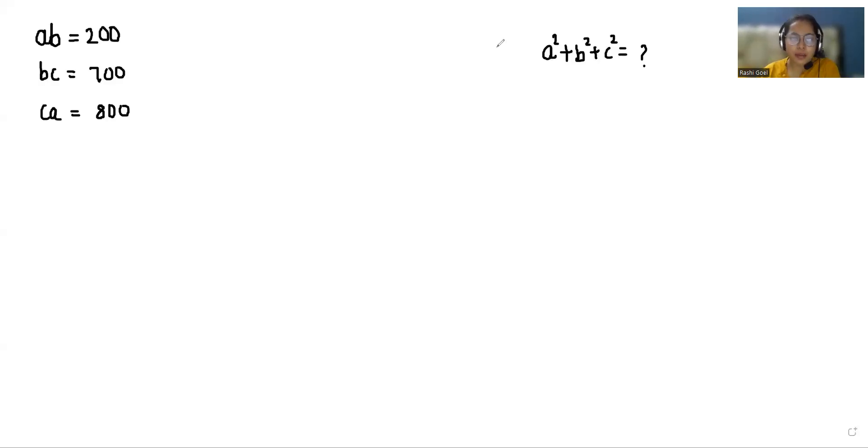Hello everyone, welcome to my channel. My name is Rashi Goyan and in this video we are going to solve when ab is 200, bc is 700 and ca is 800, and we have to find the value of a² plus b² plus c².